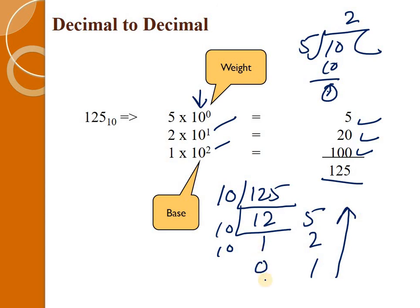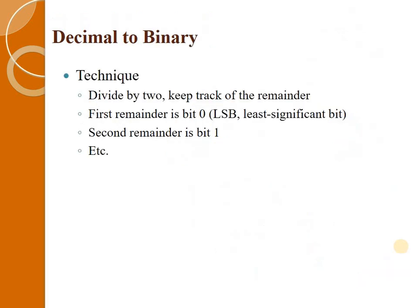Here the most significant bit is at the hundreds place and the least significant bit is at the units place. So we have MSB on the left-hand side and LSB on the right-hand side. We will do the same thing with other number systems.